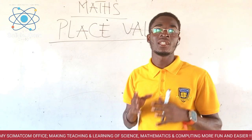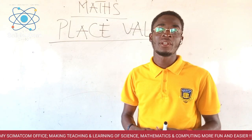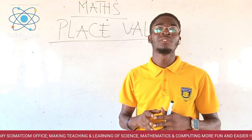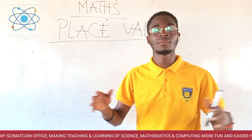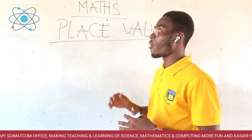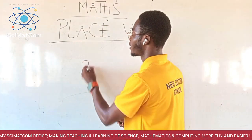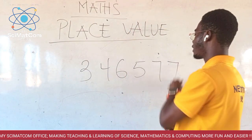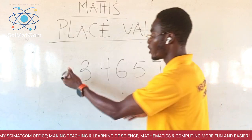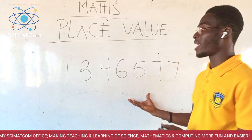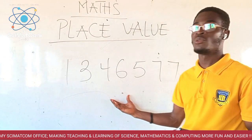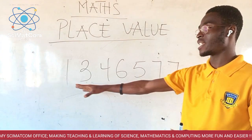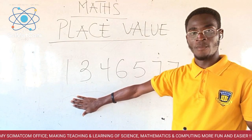The last time we discussed number and number systems. Today we are going to look at the place and then the value of a number in a particular digit or figure. For instance, when we have a number like 3, 4, 6, 5, 7, 7, we may be asked to get the place and value of each of the digits written on the board.